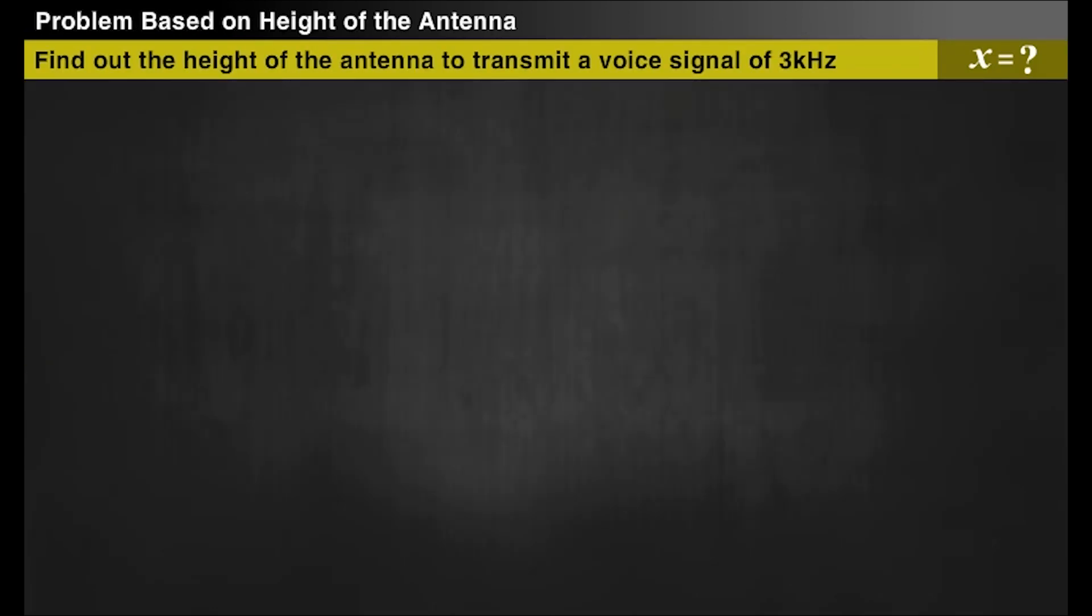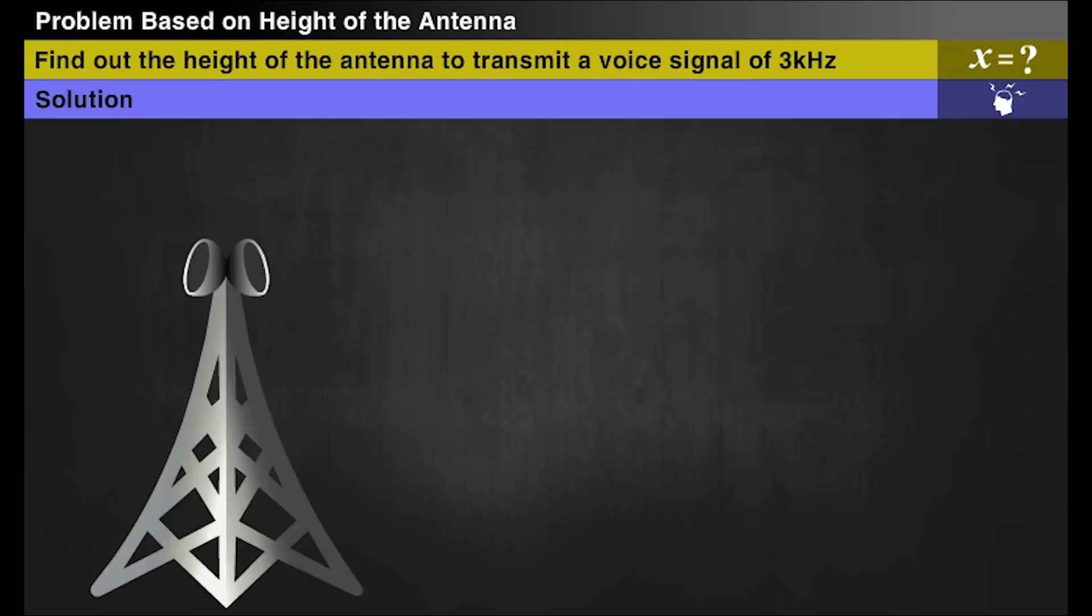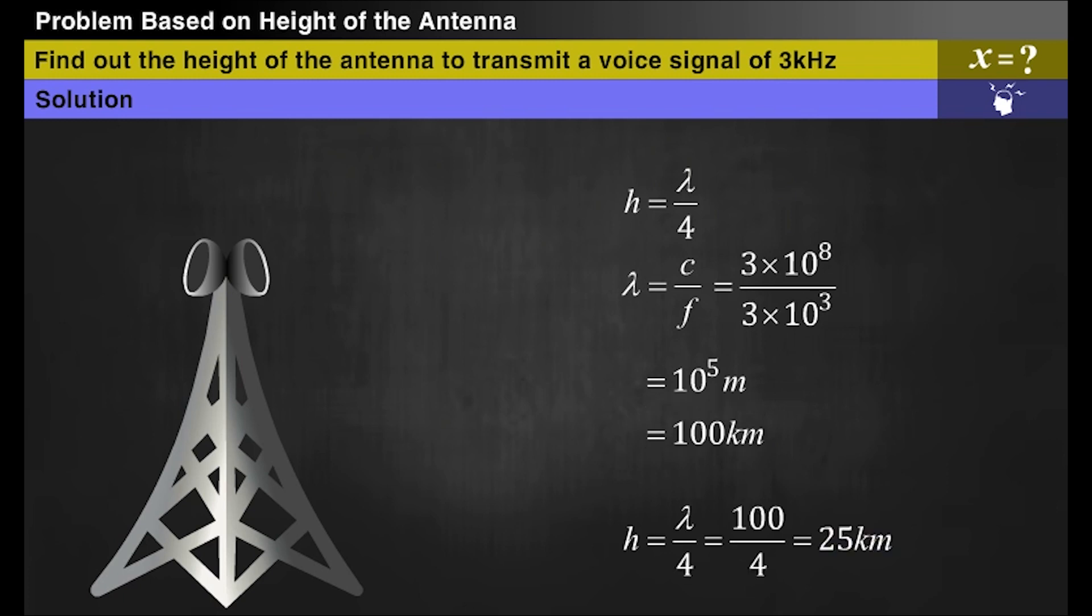Now, let us solve a problem based on height of the antenna. Find out the height of the antenna required to transmit a voice signal of frequency 3 kHz. We know that for efficient transmission, the height of the antenna should be equal to λ/4. We can obtain the wavelength from the equation shown here. Thus, the wavelength is 100 km. One-fourth of it is 25 km.